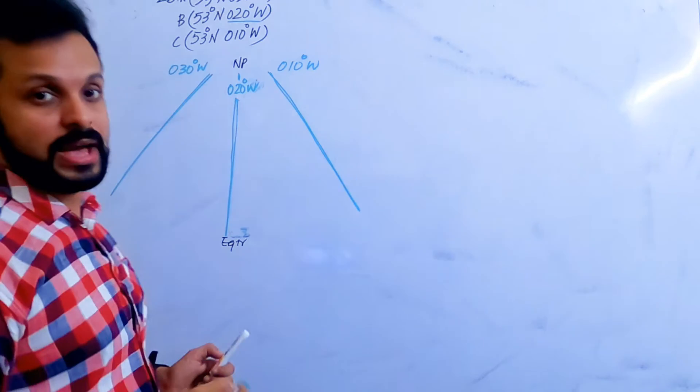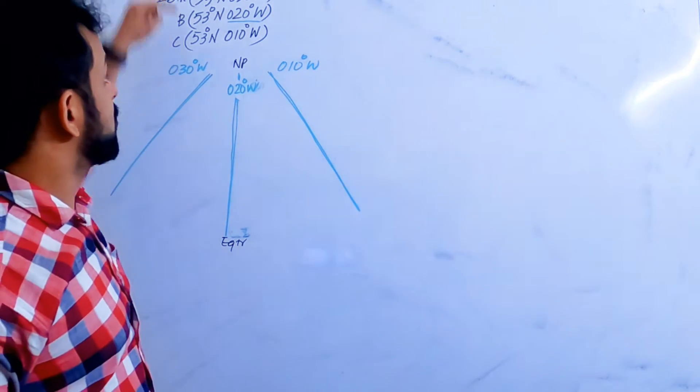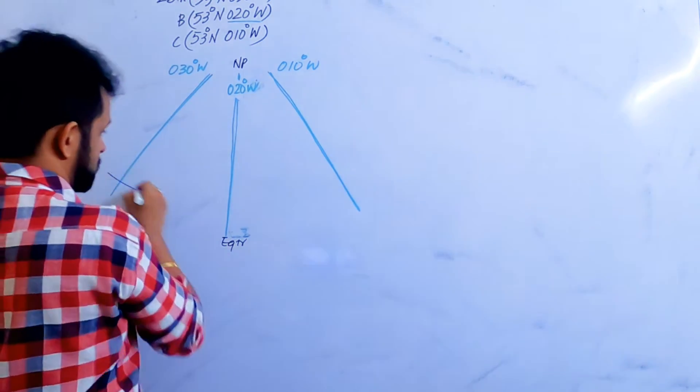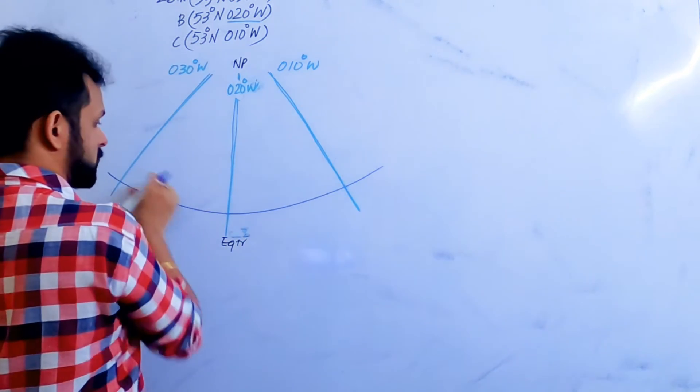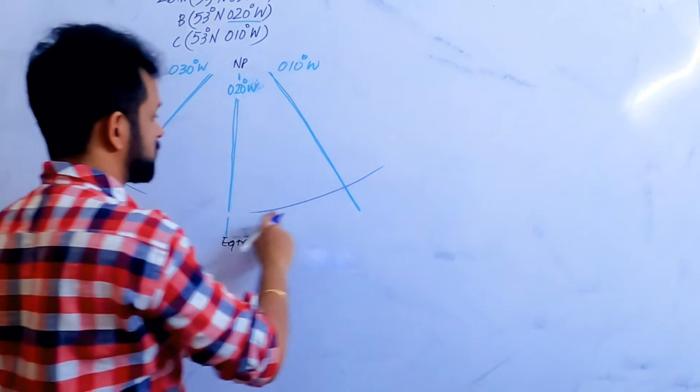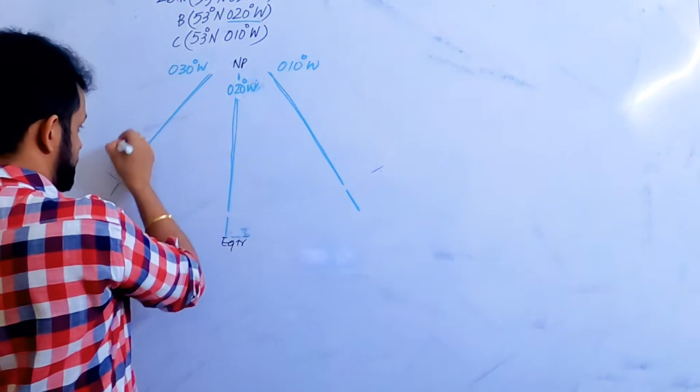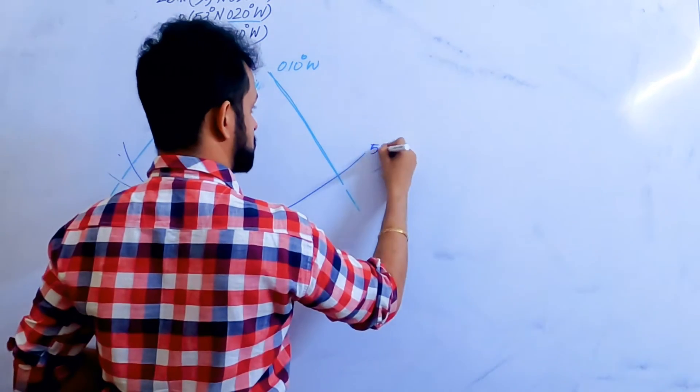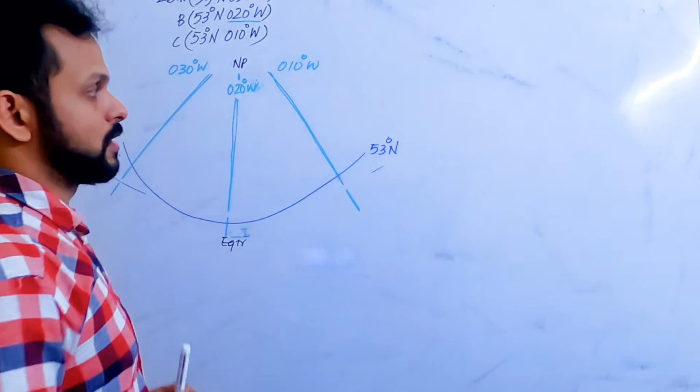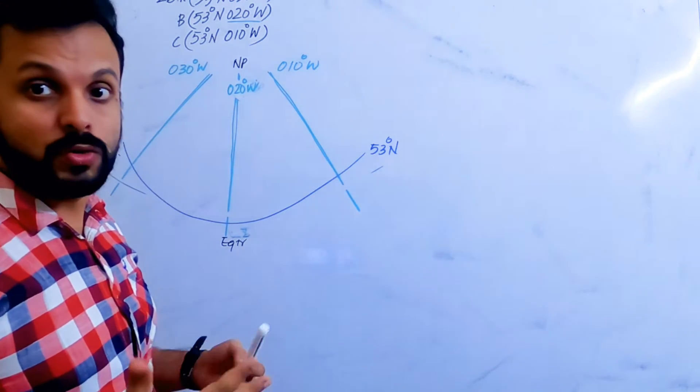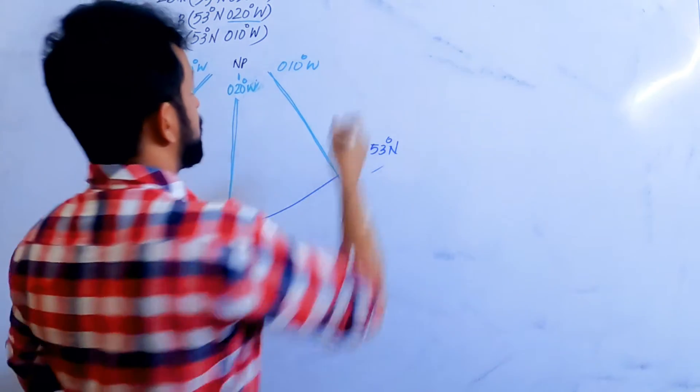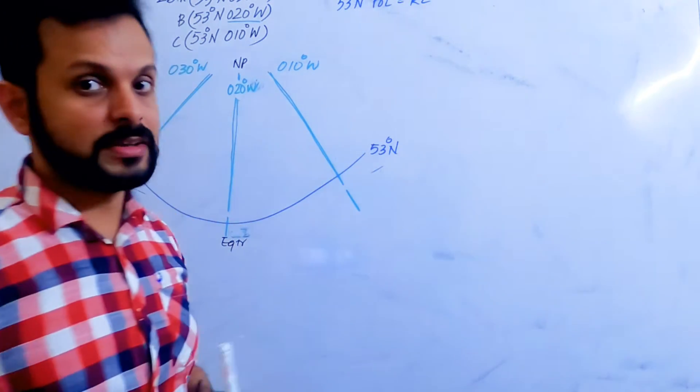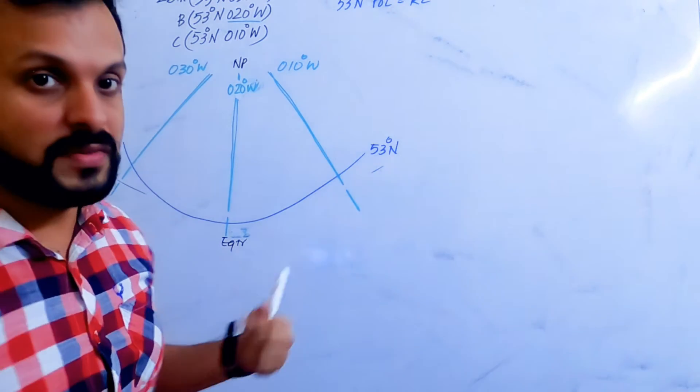Now the aircraft starts from A, B and reaches C. And the aircraft is flying along rhumb line, which is a parallel of 53 degrees north. That part is clear. Let's draw that. A great circle front line here. This is the 53 degree north parallel of latitude, which is also the rhumb line. It is going to be 90 east or 270 west.